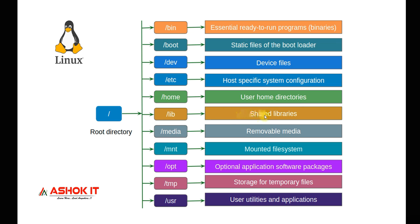The /media directory is for removable media files. The /mnt directory is for mounted file systems — for example, in AWS, EFS (Elastic File System) can be mounted to a particular directory in the Linux machine using /mnt. The /opt directory is for optional application software packages — if you want to install or keep any particular software. The /tmp directory contains temporary files which can be deleted. The /usr directory is for user utilities and user applications. This is the Linux file system hierarchy — everything starts from root directory, and for your user account, one home directory will be available.